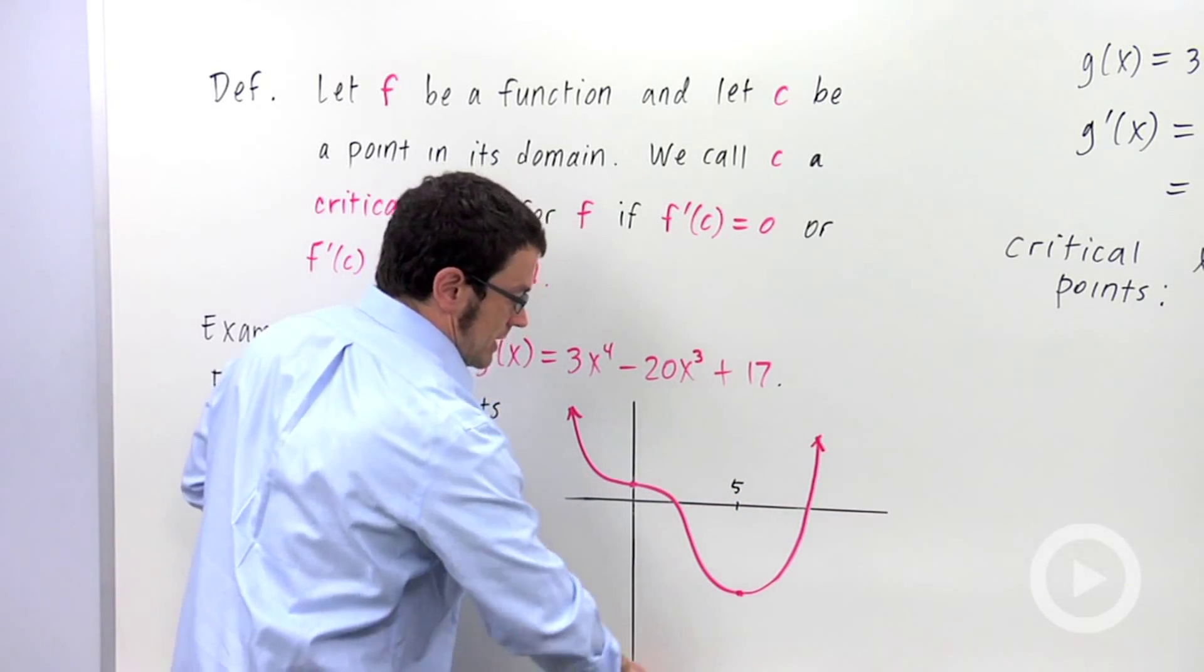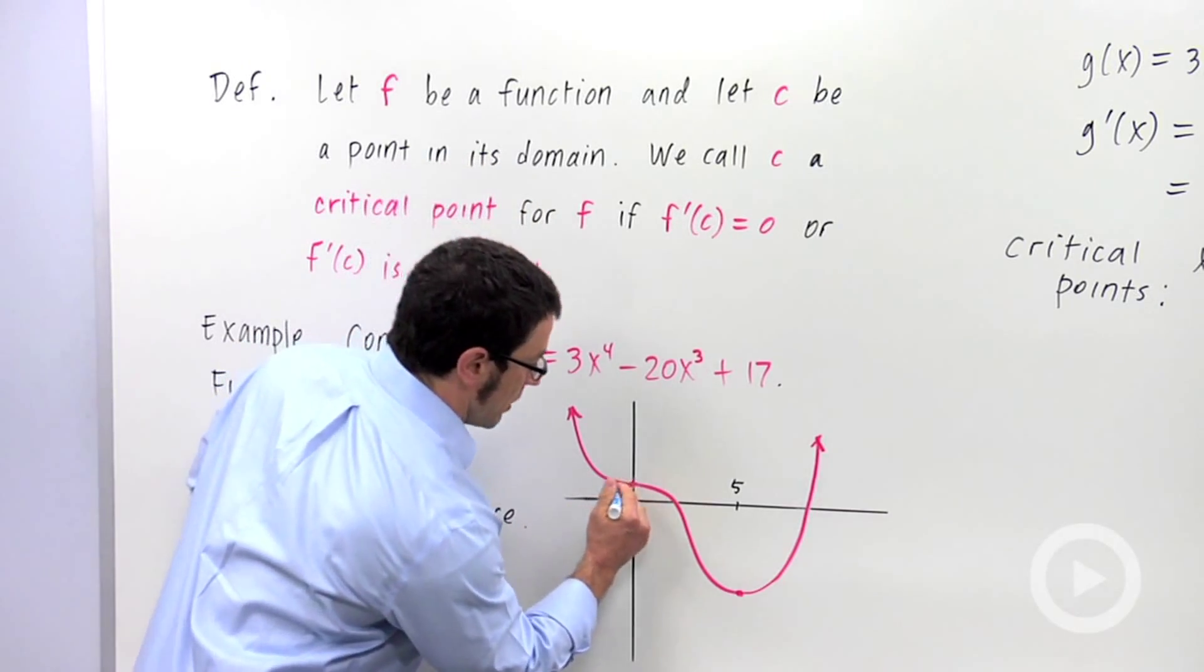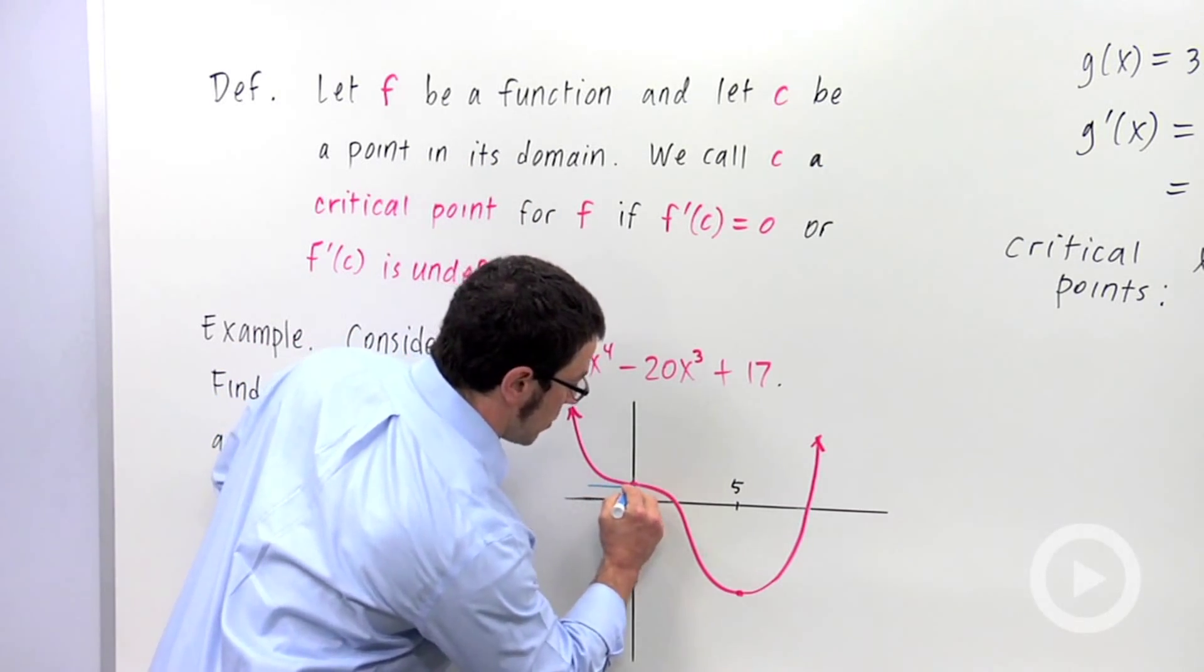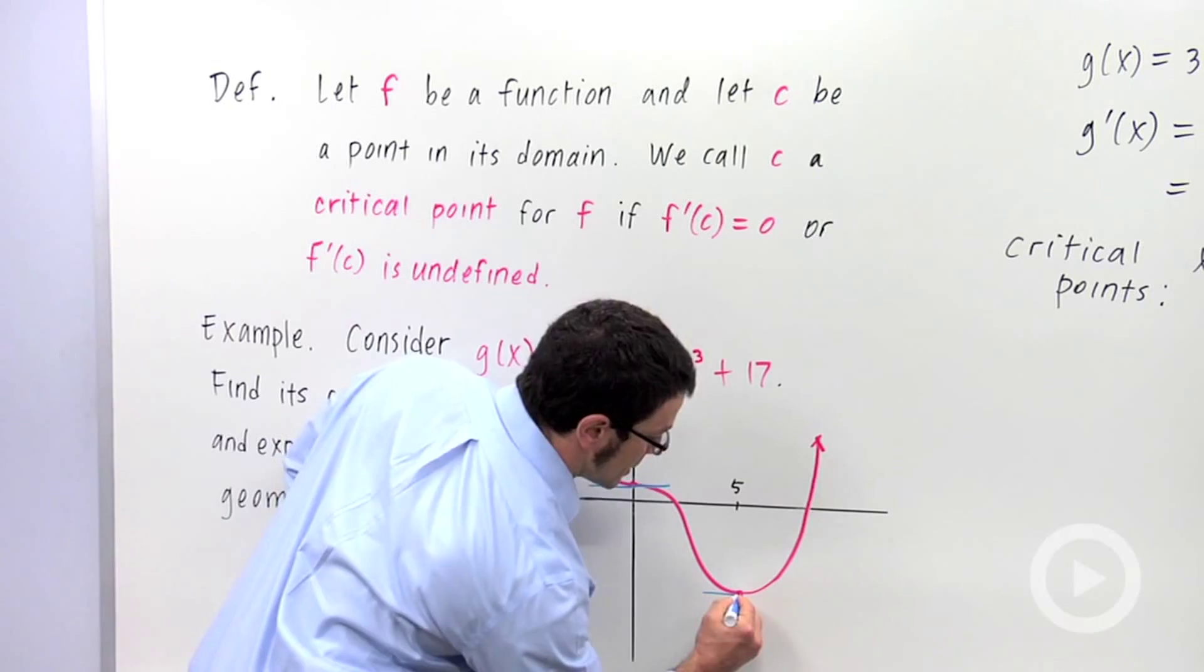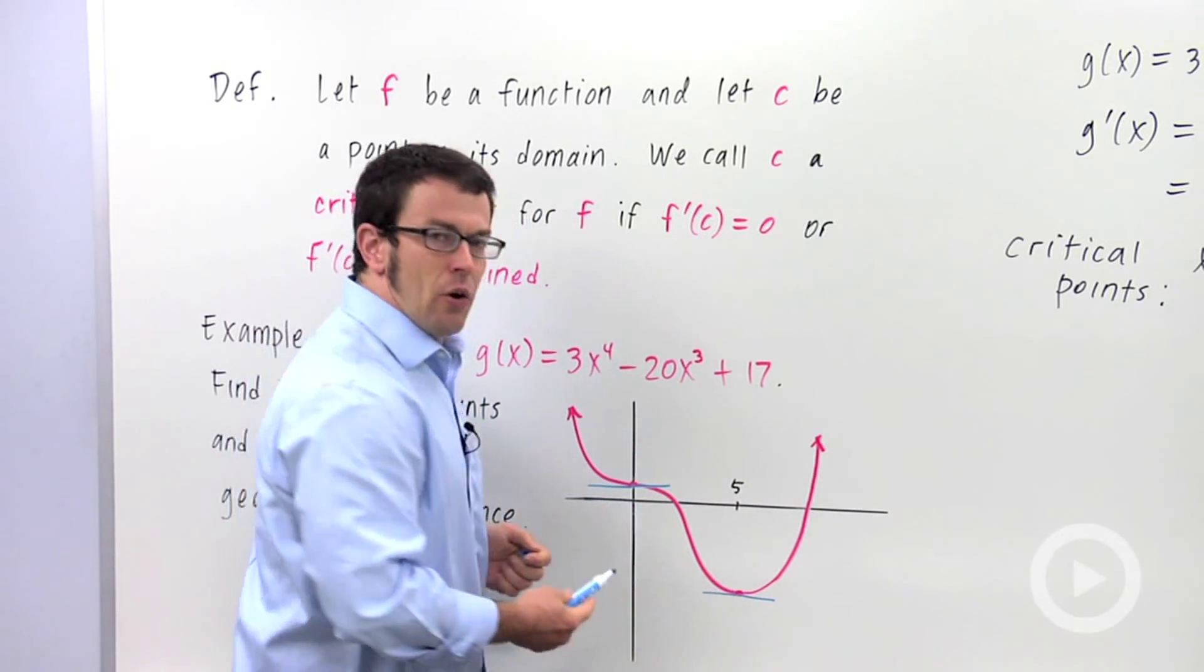And their geometric significance is that these are the points where the tangent is horizontal. So if you were to draw a tangent line at these two points, you'd get a horizontal line.